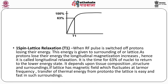Relaxation takes place by two processes, almost simultaneous. The first is called spin-lattice relaxation time, which is called T1. When the RF pulse is switched off, protons lose their energy and this energy is given to the surrounding lattice — this is why it is called spin-lattice relaxation. As protons lose their energy, the longitudinal magnetization increases, hence it is called longitudinal relaxation. T1 is the time for 63% of nuclei to return to the lower energy state. It depends on tissue composition, structure, and surrounding lattice. If the lattice has a magnetic field fluctuating at the Larmor frequency, the transfer of thermal energy from proton to lattice is easy and fast, resulting in a shorter T1.